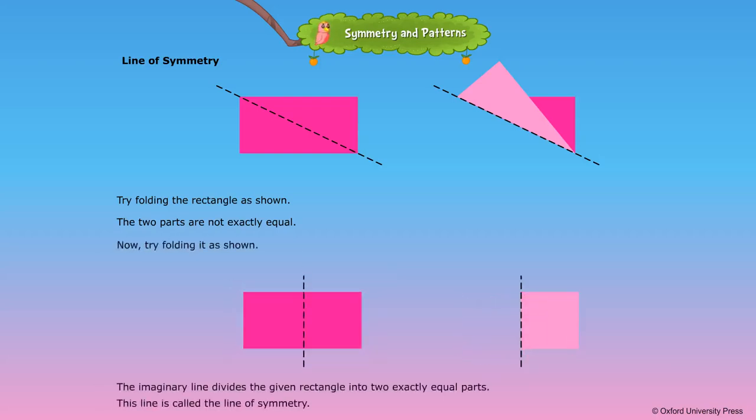Now try folding it as shown. The imaginary line divides the given rectangle into two exactly equal parts. This line is called the line of symmetry.